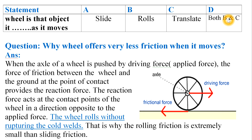A factual concept to remember: whenever a wheel is moving, it has two types of motion — one is in a straight line and the other is rotatory motion, that is, it rolls around the axis. The next question is a concept cascaded with friction: why does a wheel offer very less friction when it moves? Today we will learn about this concept.